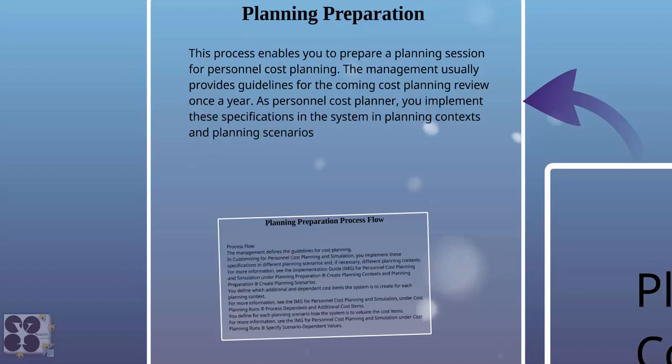Each and every company has their own standards and methods of planning. For example, how many extra hours of factory workers are needed for this year, or how much bonus we anticipate employees will earn in this particular year? We set aside cost for each proposed budget, each proposed investment, and each proposed project — anything with cost implications. Companies usually plan ahead of time, at the beginning of the year, so they have a parameter set. That is how you define planning preparation.